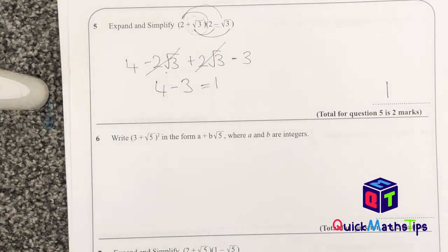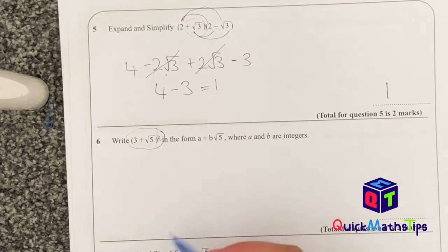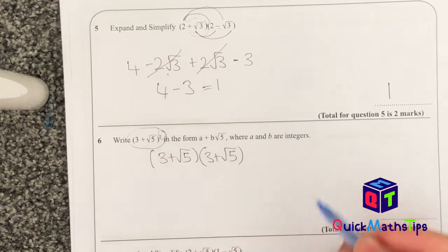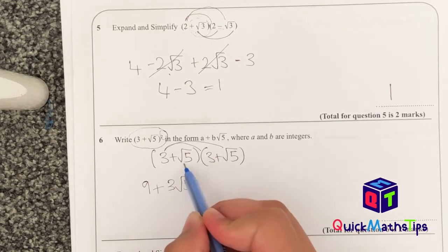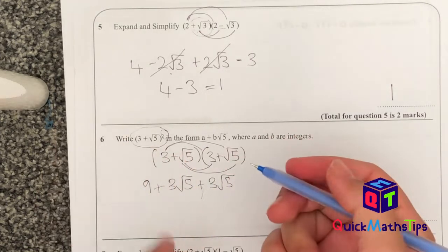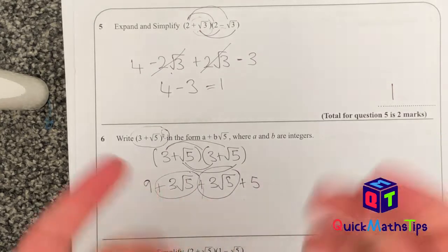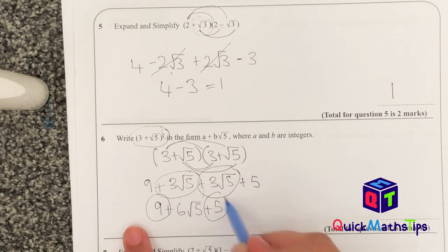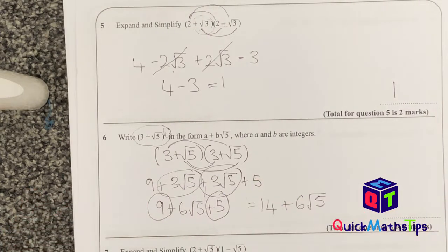Next: write (3 + root 5) squared in the form a + b root 5 where a and b are integers. Squared means the bracket is multiplied by itself, so I expand (3 + root 5)(3 + root 5). 3 times 3 = 9; 3 times root 5 = 3 root 5; root 5 times 3 = 3 root 5; root 5 times root 5 = 5. The two 3 root 5 terms combine to give 6 root 5. Then 9 + 5 = 14. Final answer: 14 + 6 root 5.